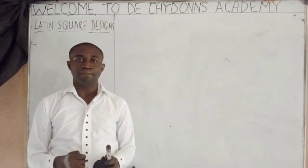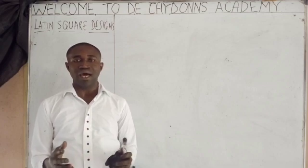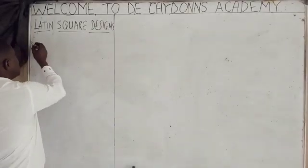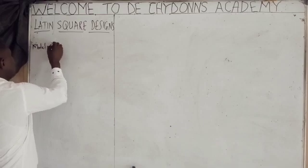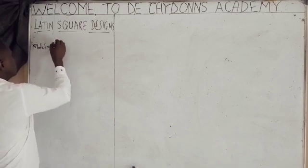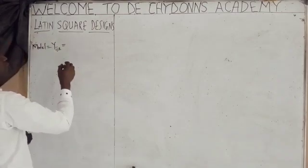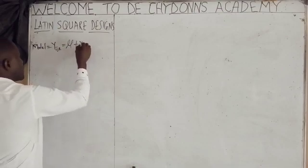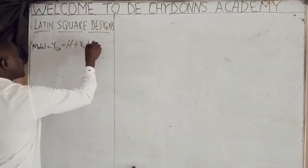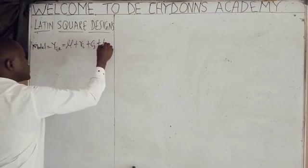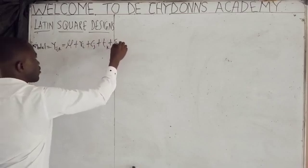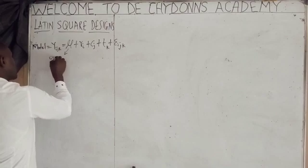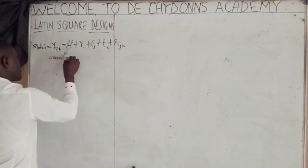In Latin Square design, it is one of the statistical techniques we use to analyze data. It has a model. The model is written as YIJK equals overall mean plus RI plus CJ plus treatment effect plus random error.